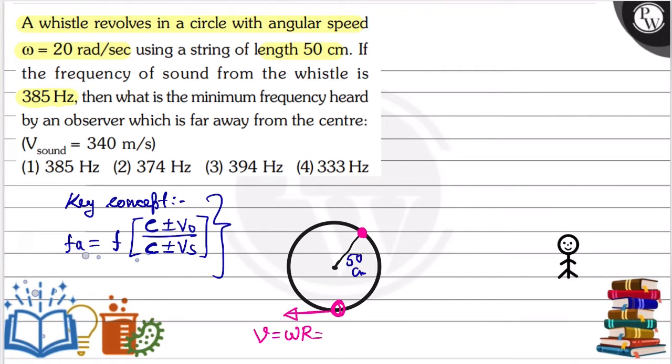Omega in the question is 20 radian per second, r value is 50 cm. If you convert to meters, that's 0.5, so the velocity is 10 meter per second.